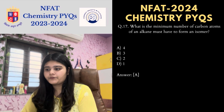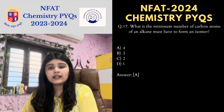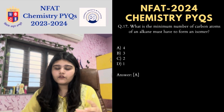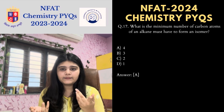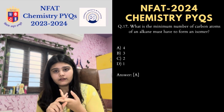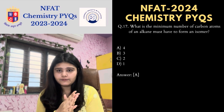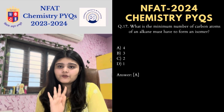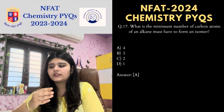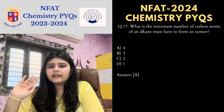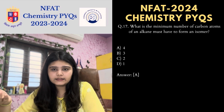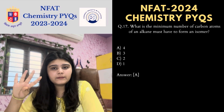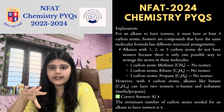Next MCQ: what is the minimum number of carbon atoms an alkene must have to form an isomer? Looking at examples — methane, ethane, propane, butane — in the case of butane and isobutane, isomers can be formed. So a minimum of 4 carbon atoms are needed, and option A is the correct answer.